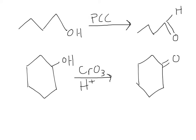We used PCC to turn a primary alcohol into an aldehyde, and we used chromic acid to turn a secondary alcohol into a ketone. But either reagent will work for either scenario.